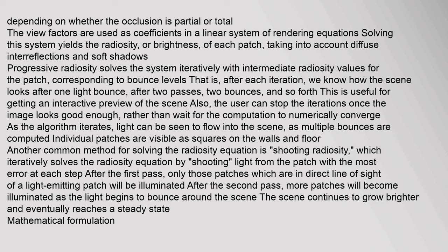As the algorithm iterates, light can be seen to flow into the scene as multiple bounces are computed. Individual patches are visible as squares on the walls and floor. Another common method for solving the radiosity equation is shooting radiosity, which iteratively solves the radiosity equation by shooting light from the patch with the most error at each step. After the first pass, only those patches in direct line of sight of a light-emitting patch will be illuminated; after the second pass more patches become illuminated as light begins to bounce around the scene.